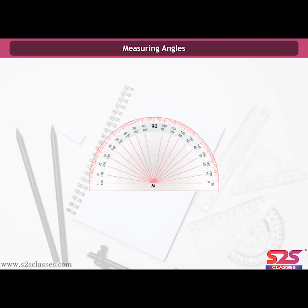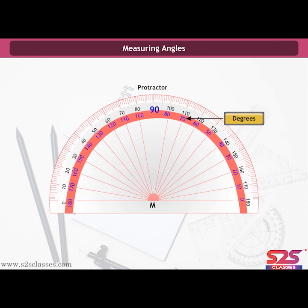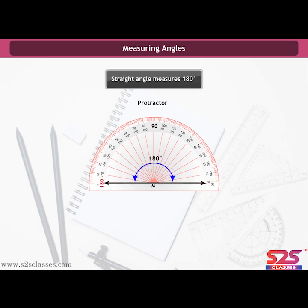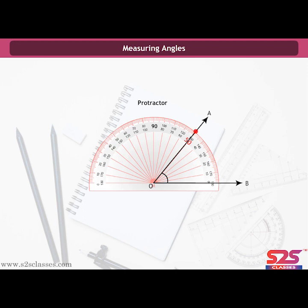Measuring Angles. We learnt to compare angles using a right angle tester. To be more precise, we need to measure angles. The instrument used to measure an angle is called a protractor. Angles are measured in degrees; the number of degrees tells how wide open the angle is. There are 360 degrees in one complete angle, a right angle measures 90 degrees, and a straight angle measures 180 degrees. To measure angle AOB, place the protractor horizontally over line OB so that O and M coincide. The side OA falls on the 50-degree mark, so angle AOB measures 50 degrees.